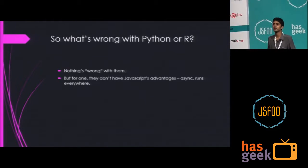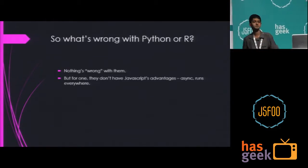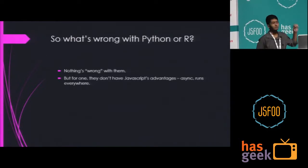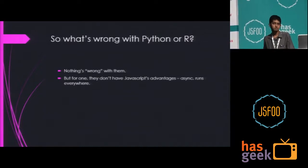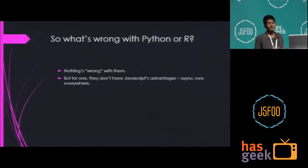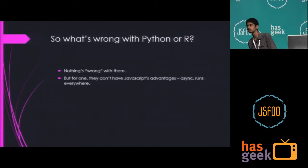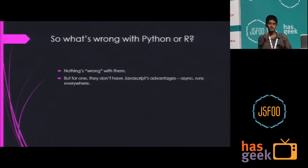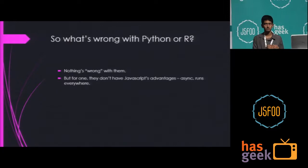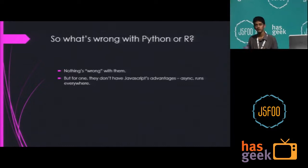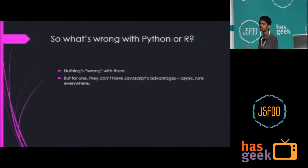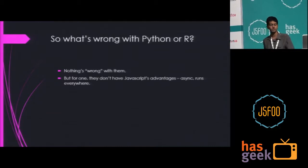So what's wrong with Python and R? Well, nothing's really wrong with them — they're great languages. But personally, I believe they don't have the advantages that JavaScript currently has. For instance, asynchronicity. Python does have a couple of third-party libraries that allow you to write asynchronous code, but that's not something the language itself supports. JavaScript? Hell yes — supports it like a charm. And the second reason: runs everywhere. R just runs on a server or a normal computer. Python does run in the browser — there's an open-source project called Brython — but it's not exactly the same thing as JavaScript.